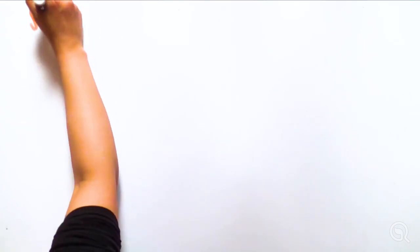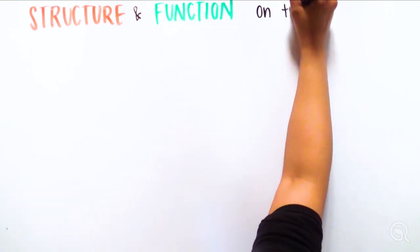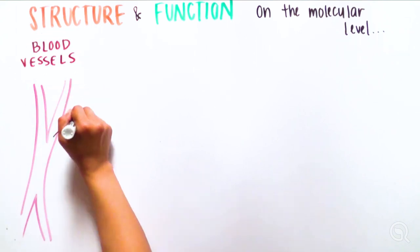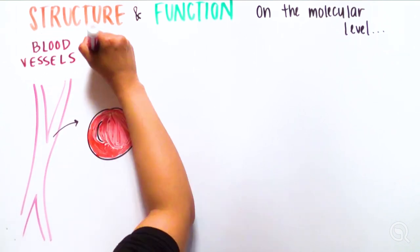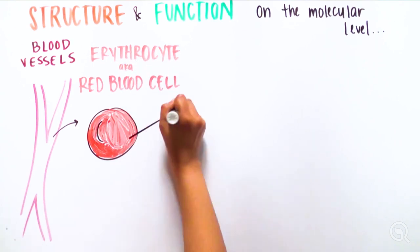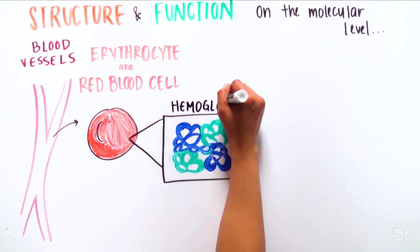The structure and function connection is found at all levels of biological organization, including the molecular one. Within the blood flowing through her blood vessels are erythrocytes, or red blood cells. Inside each red blood cell is an important protein called hemoglobin. Each protein has a unique shape that allows it to function.